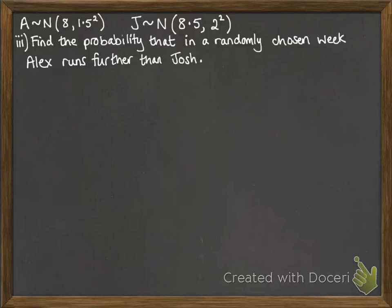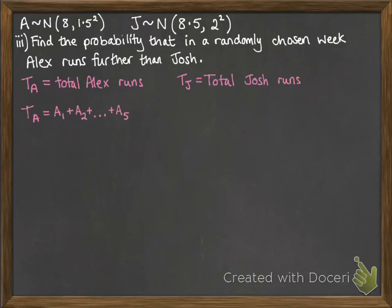Now I'm going to stick with that same theme. This time, a third part, we're going to find the probability that in a randomly chosen week, Alex runs further than Josh. You need to be careful with this one. If I say TA is the total that Alex runs and TJ is the total that Josh runs, then TA is the same as saying A1 plus A2 plus A5. So five separate instances on the five different days on the weekdays that he runs added together. Now remember, this is not the same as if you did 5 times A. It's very tempting to jump in here and do five lots of A rather than thinking about this as five instances of A added up.